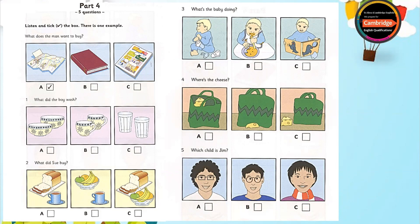4. Where's the cheese? Where's the cheese? I need it for the sandwiches. It's in your shopping bag, I think. Or is it on the table? No, I looked there. Oh, here it is. It's under my bag. Oh, yes. I didn't see it there. Sorry.